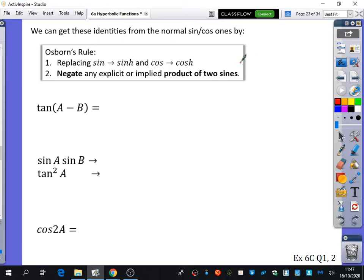And the way that this works, and we'll go back to this and show why it works with these ones, Osborn's rule says that you, first of all, replace all of the sine and cos with sinh and cosh, very obviously if you want to make it become hyperbolic,